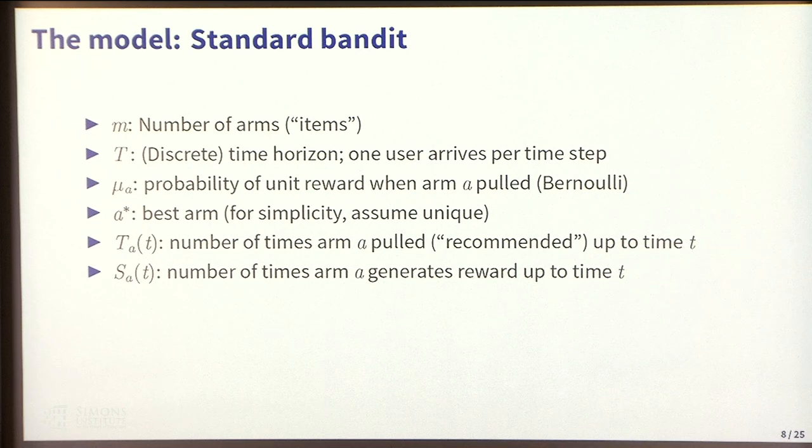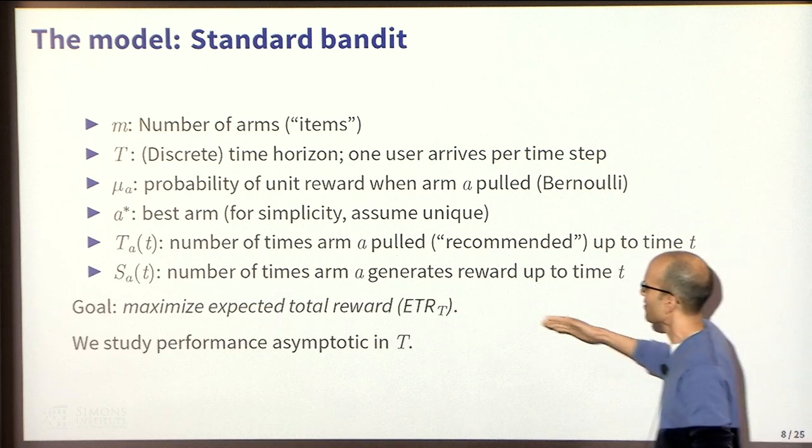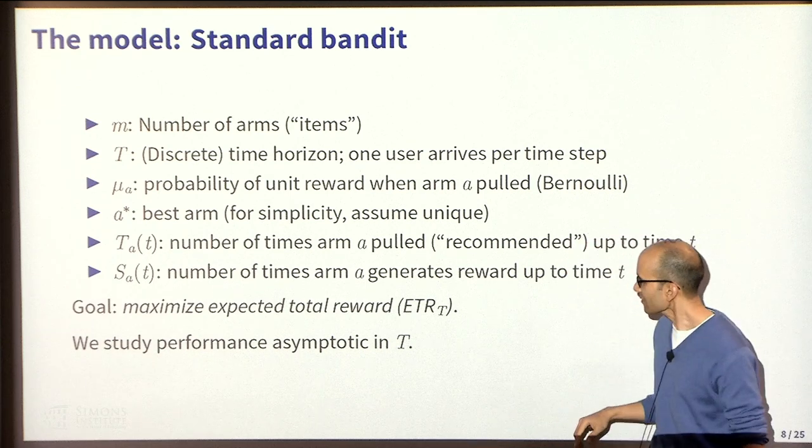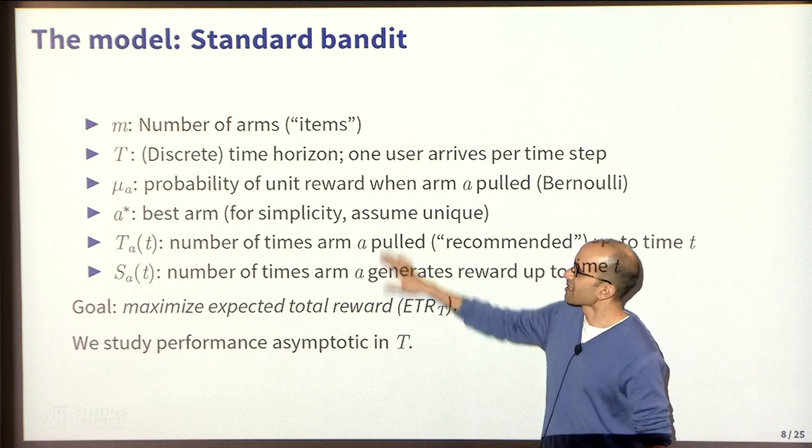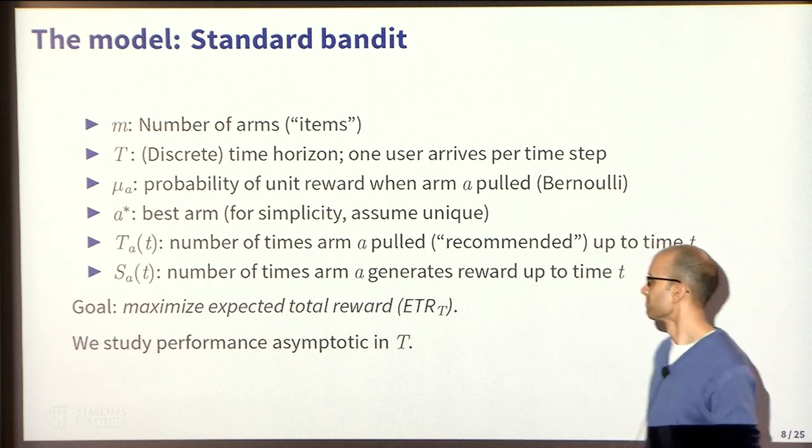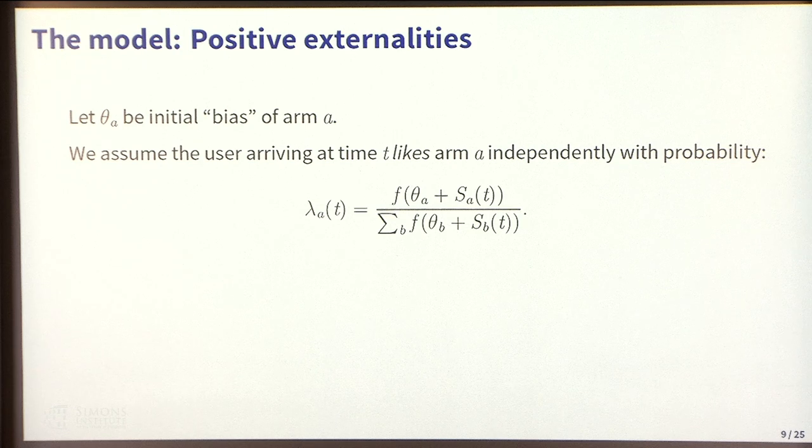A star is going to denote the best arm. For simplicity, we'll assume it's unique. Then two additional pieces of notation that denote the number of - there's a spider that's actually walking down my slide. T_A of T is the number of times that arm A is pulled or recommended up to time T. Think of these arms as items, think of pulling as recommendation. Then S_A of T is the number of times that I actually get a reward on arm A. Crucially, the platform's goal is to maximize its expected reward over that time horizon. All of our analysis is done asymptotic in T. We're not providing finite time bounds here.